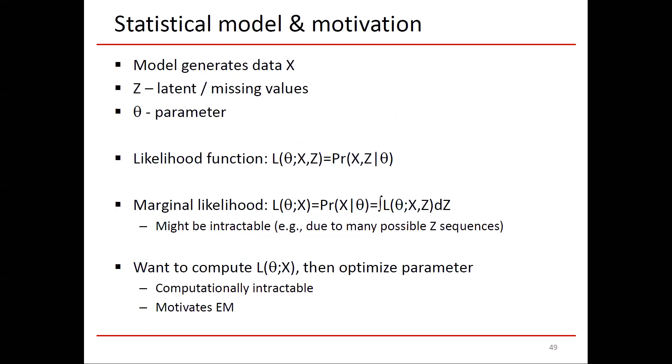Let's work through the details. We have a model that generates the data X and we have latent variables Z. We know X, but we don't know Z. We have parameters theta. We want to calculate L of theta semicolon X and Z. This notation means the probability of X and Z conditioned on theta. Ideally, we'd like to calculate the probability of X conditioned on theta, and we can do that by integrating over L of theta XZ, which is the probability of X joint with Z conditioned on theta, integrating over all the DZs.